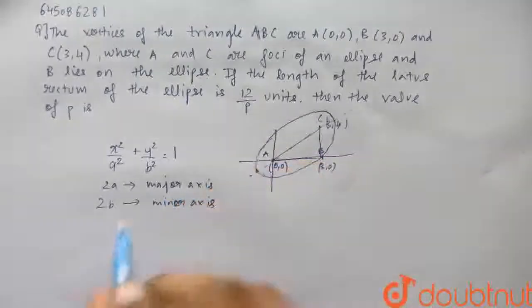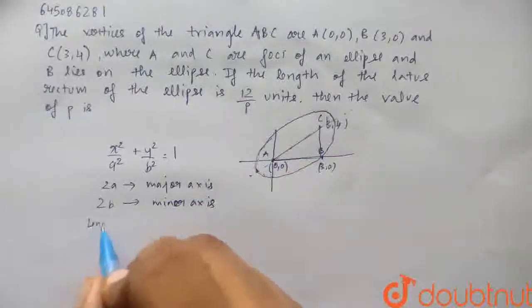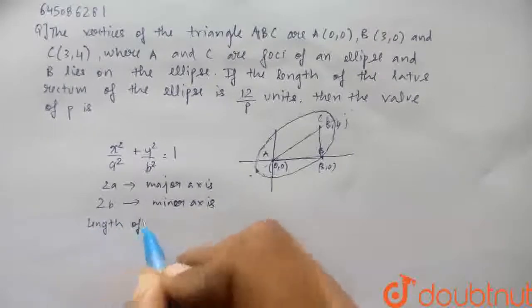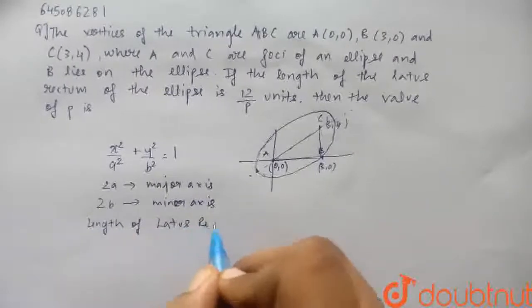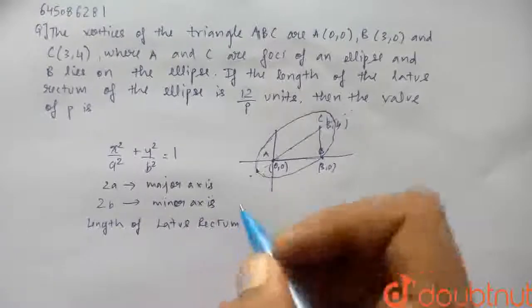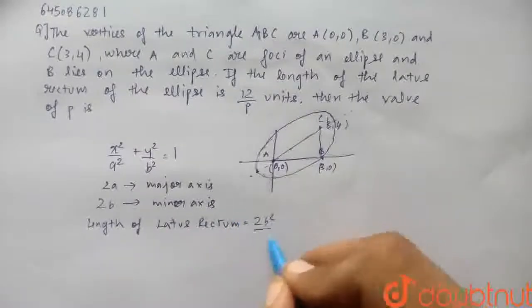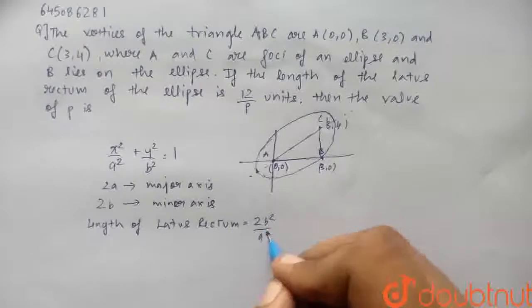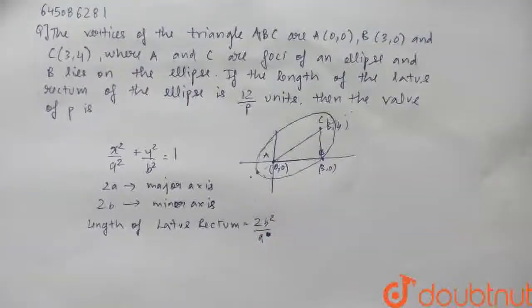Now if it is the case, then the length of the latus rectum is equals to 2b²/a. Not a square, it is 2b²/a.